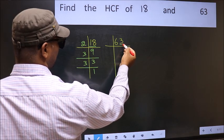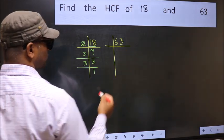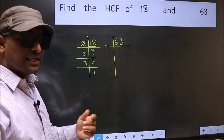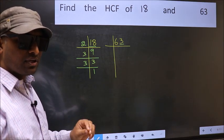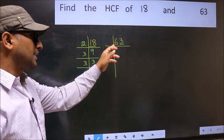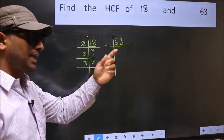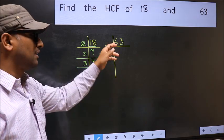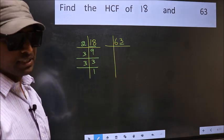Last digit is 3, not even, so not divisible by 2. Next prime number is 3. To check divisibility by 3, add the digits. 6 plus 3, we get 9, and 9 is divisible by 3. So this number is also divisible by 3.